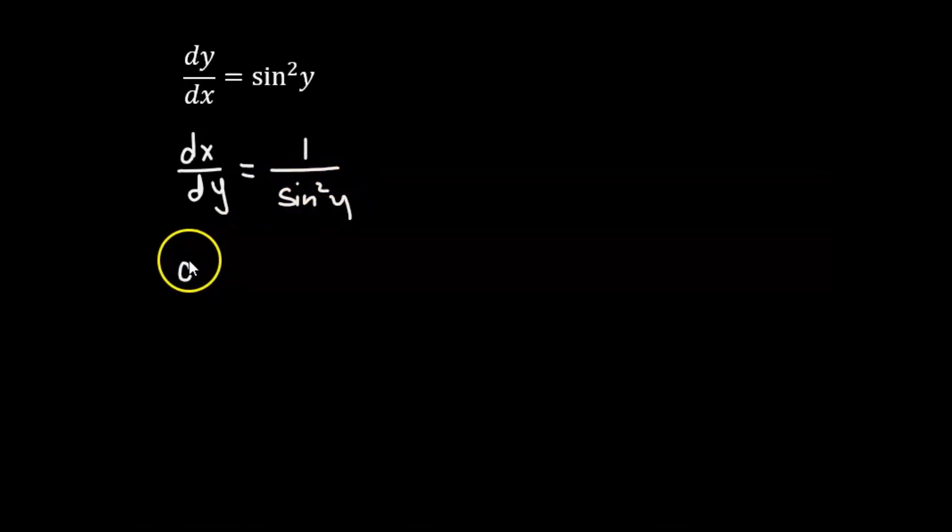Now we know that 1 over sin squared y is the cosecant function. So that will give us cosecant squared y.